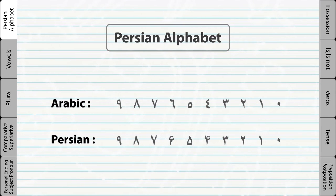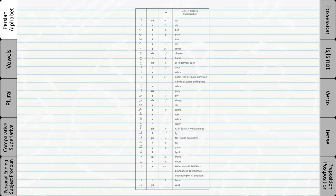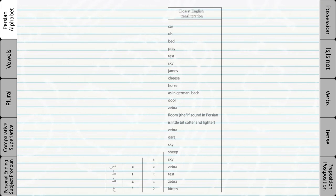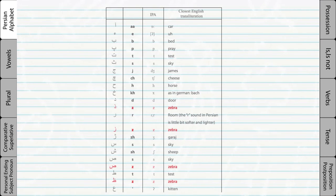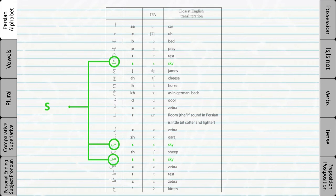Persian and Arabic numbers are also very similar, except for the numbers 4, 5, and 6. Although Persian and Arabic share a very similar alphabet, not all the letters are pronounced the same. For example, these 4 letters all have a different sound in Arabic, while in Persian they are all pronounced the same. These 3 letters are also pronounced differently in Arabic, but they all sound the same in Persian.